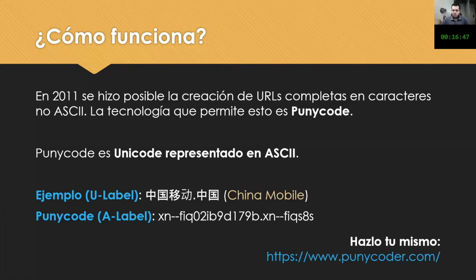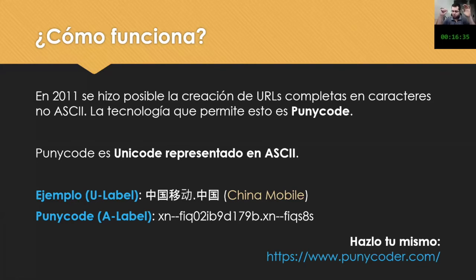So how does universal acceptance work? In 2011, it was possible to create complete URLs in non-ASCII characters. The technology that permits that is Punycode. Punycode is Unicode represented in ASCII.